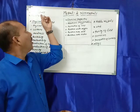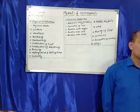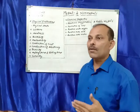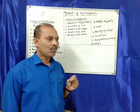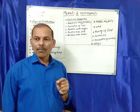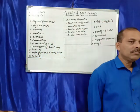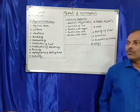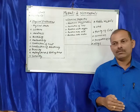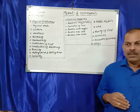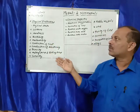Metals are elements which lose electrons, forming positively charged ions. Metals lose their valence electrons to form cations. Non-metals are elements which accept electrons to form negatively charged ions, that is anions. These are the major properties of metals and non-metals.